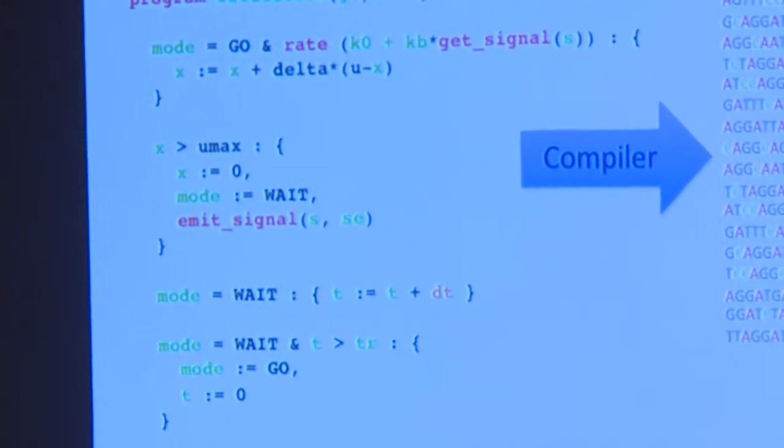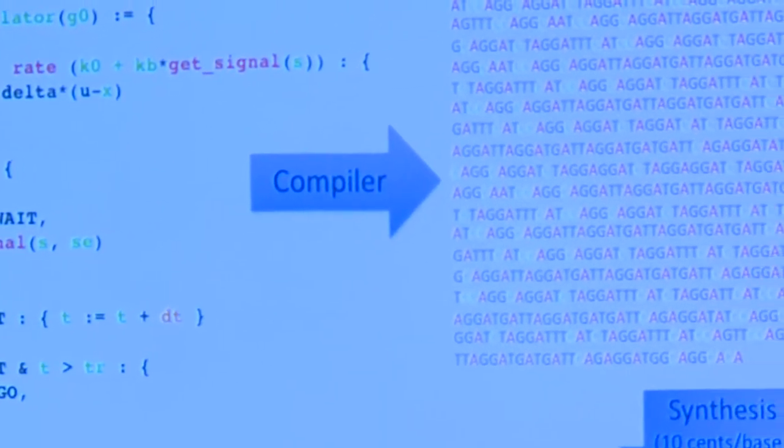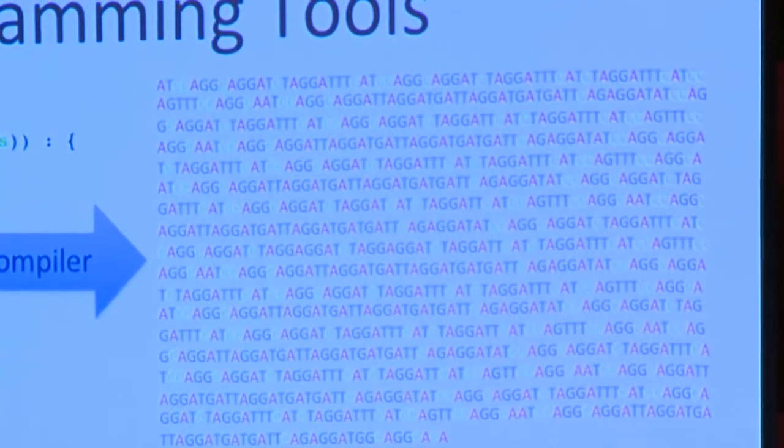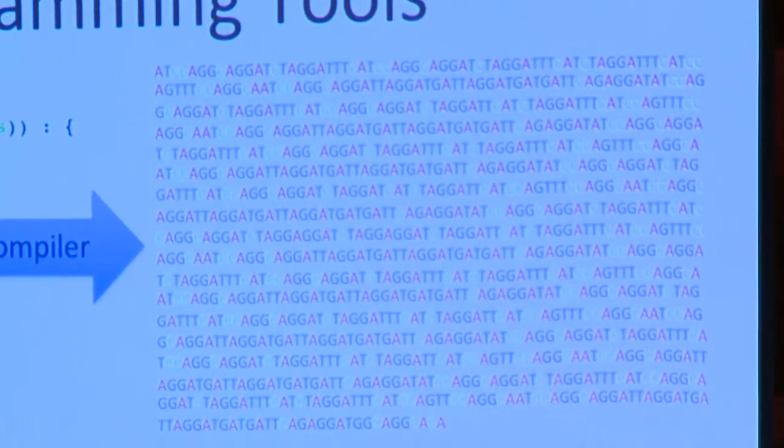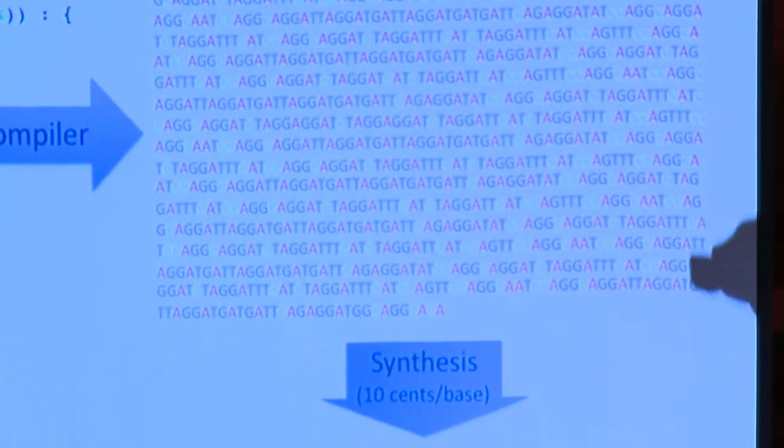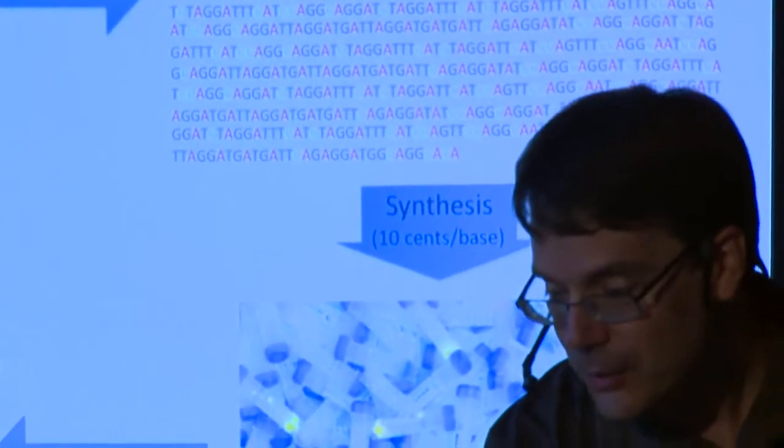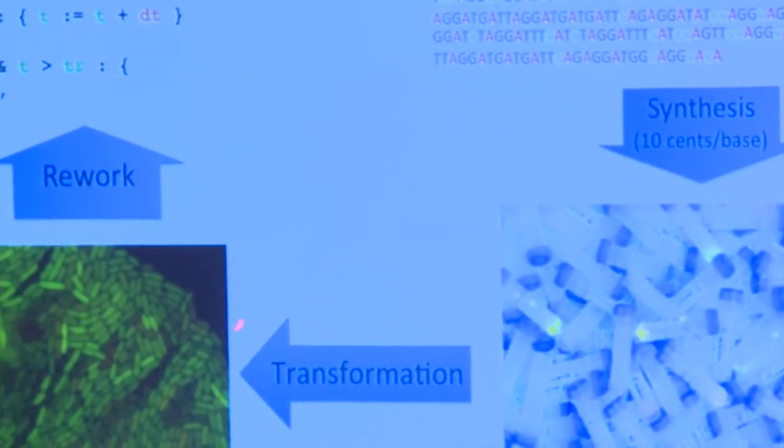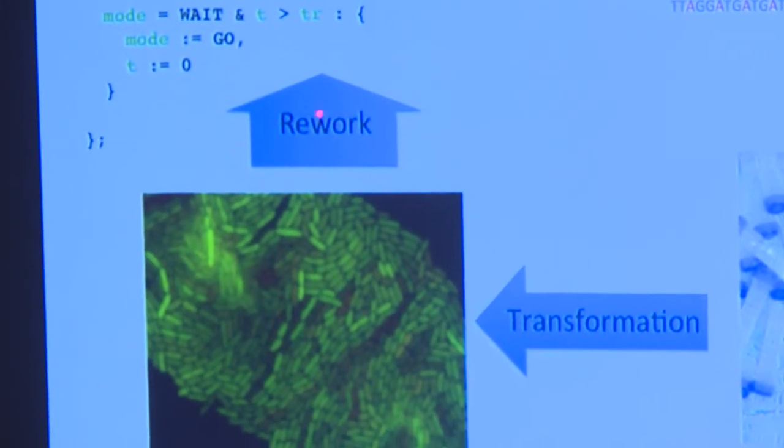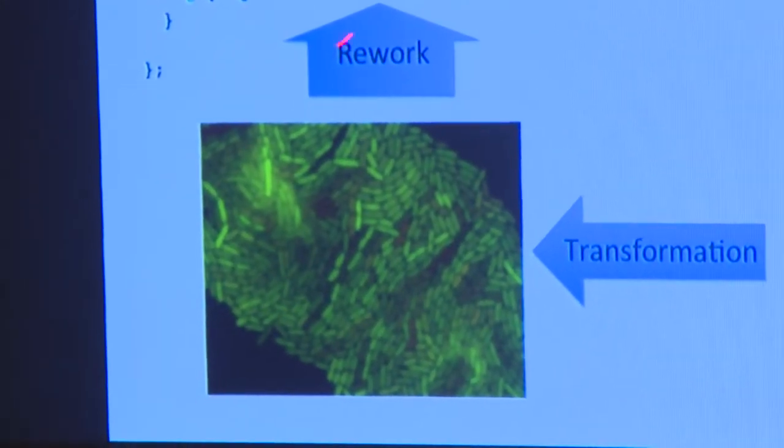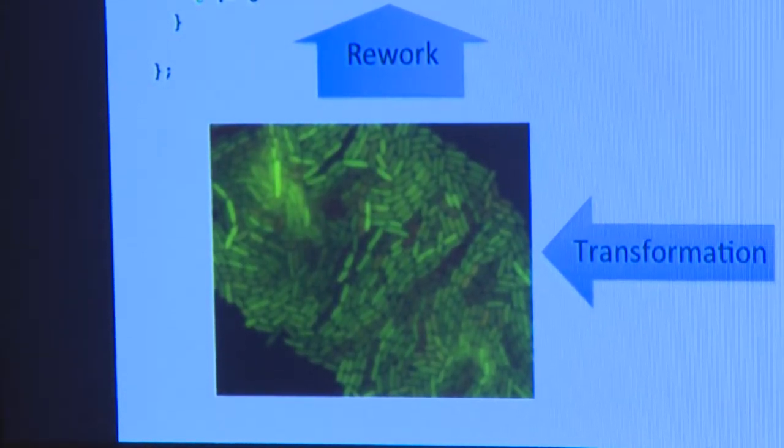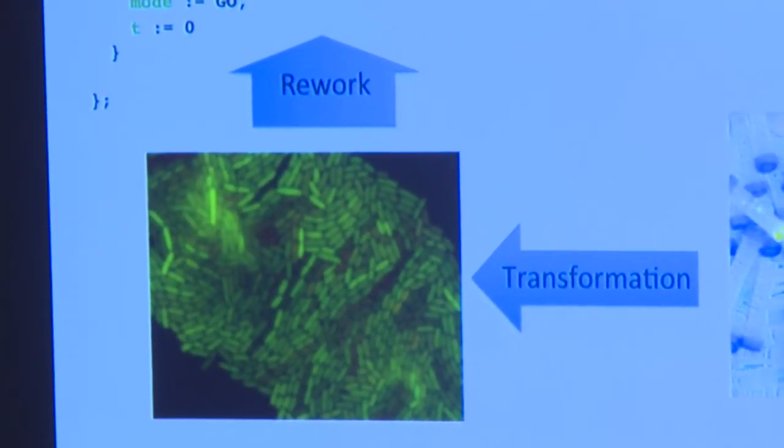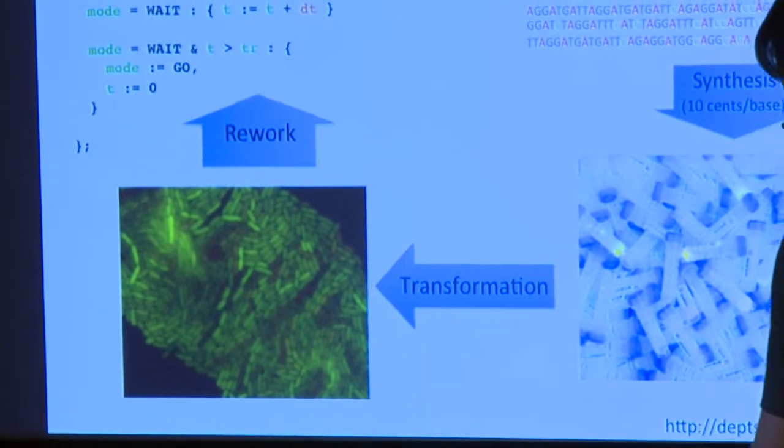And somehow compile it down into a sequence of ATCs and Gs, that then you send to DNA 2.0, and they send you tons and tons of test tubes. The test tubes have the DNA in there. You reconstitute it, you transform it into your cells, and you get some crazy behavior, and hopefully it matches what the program said you were supposed to do. And usually it doesn't, and that's why it's research. And so we take that, and we rework the program, we rework the compiler, and we try again. And we sit around going around in circles until out pops a paper, and that's the process in my lab.